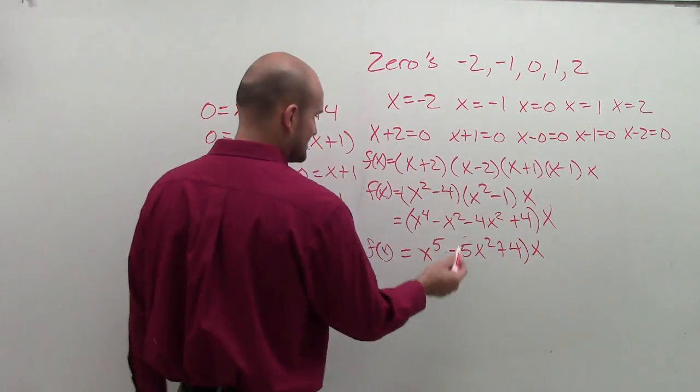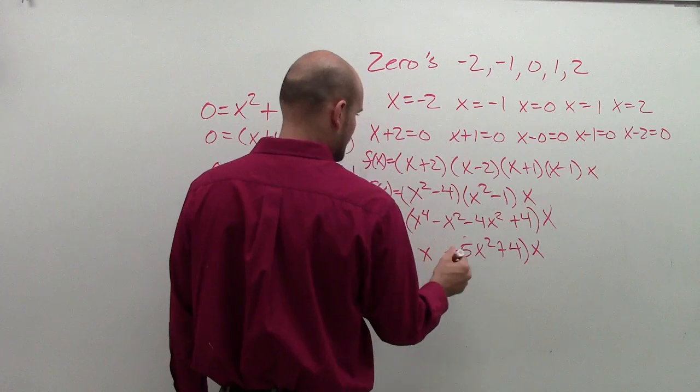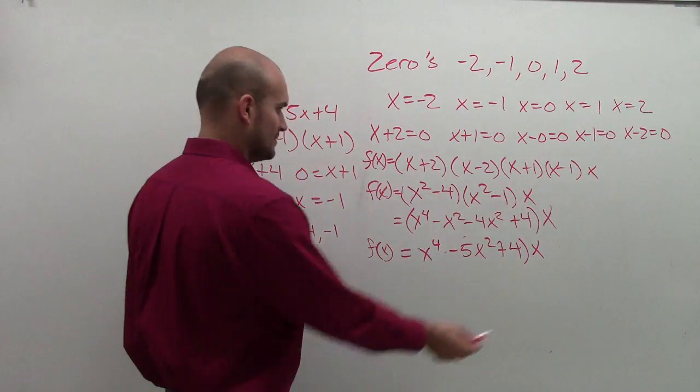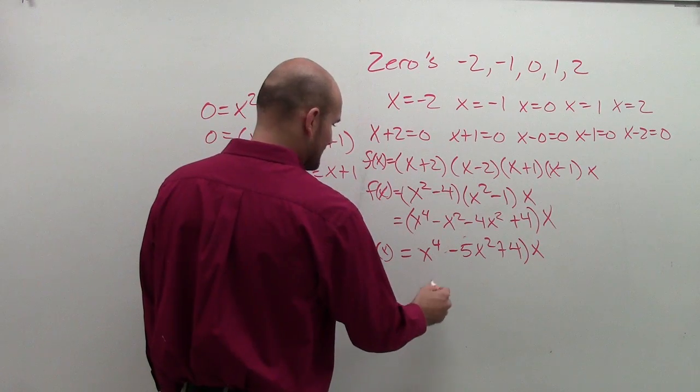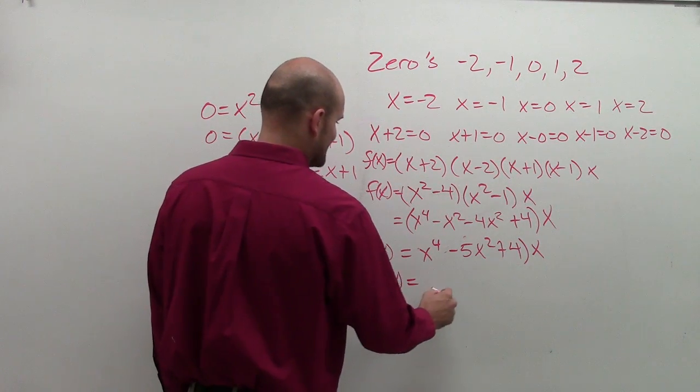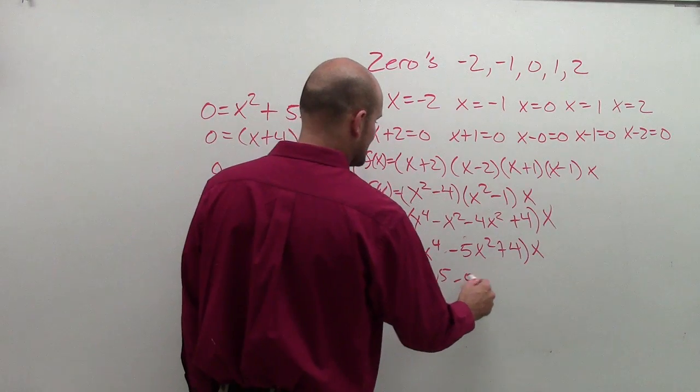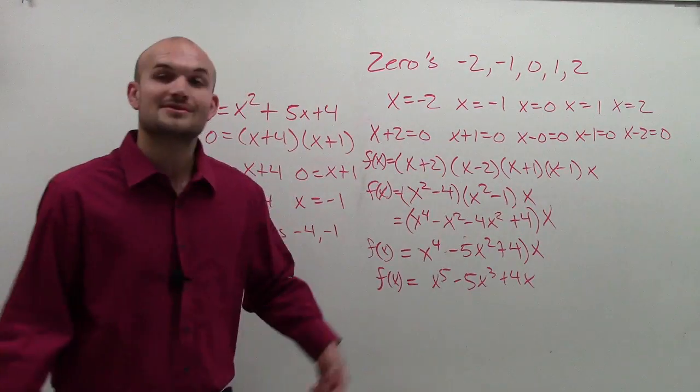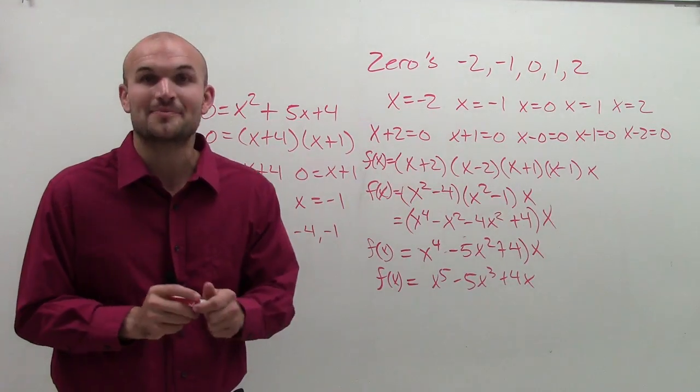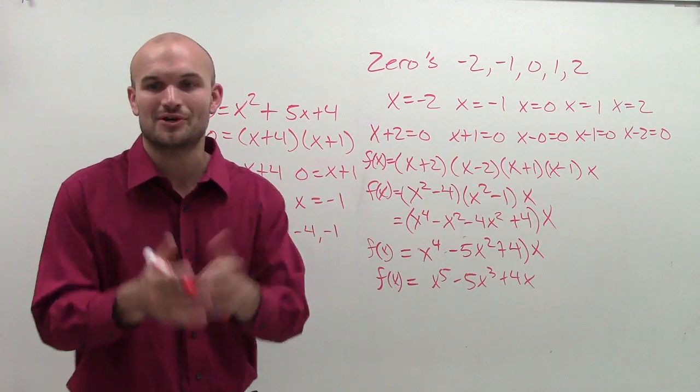So when I multiply that by x, there we go. So you combine these two terms, right, because they're both x squareds. So therefore, when you multiply through, your final answer is x to the 5th minus 5x cubed plus 4x. So there we go, ladies and gentlemen. Sorry, that got me a little off track, but I got it now. We're all good.